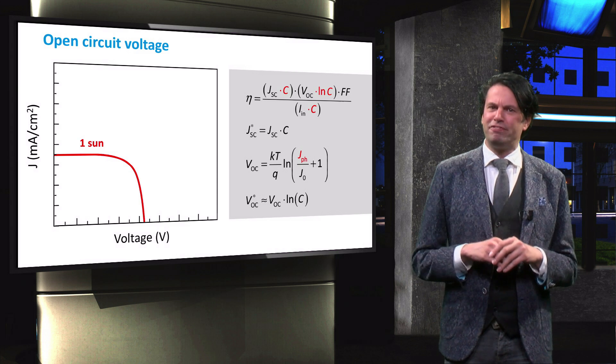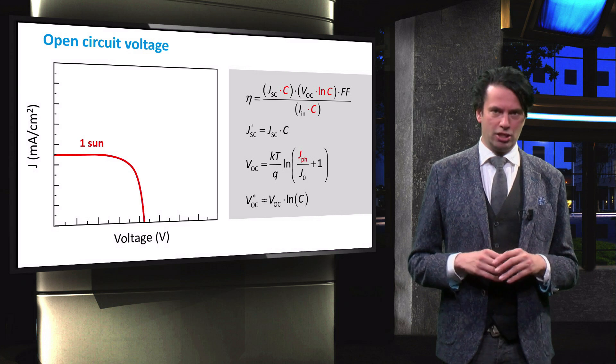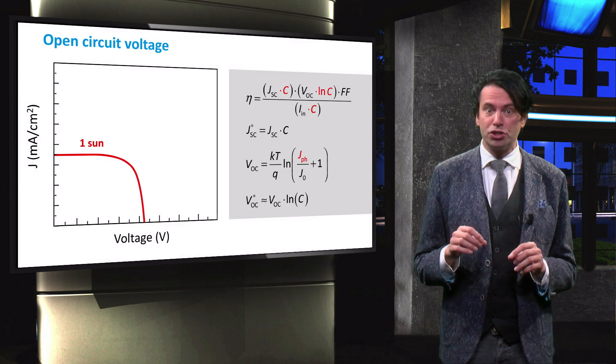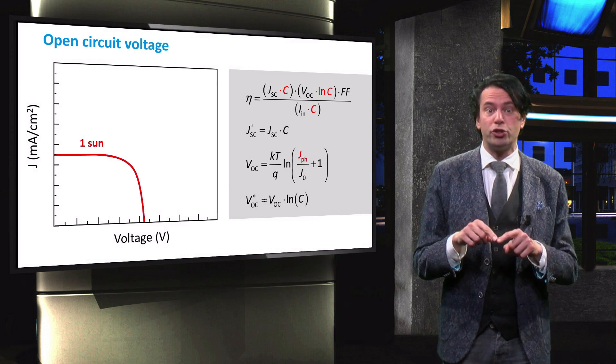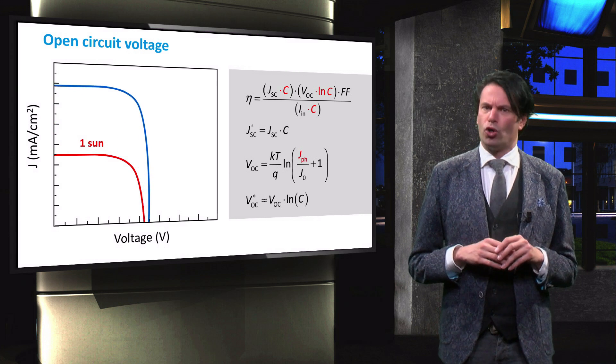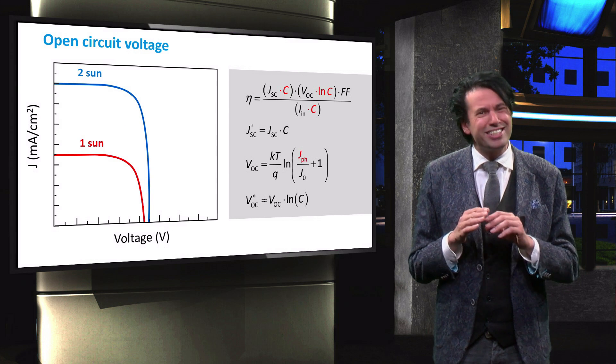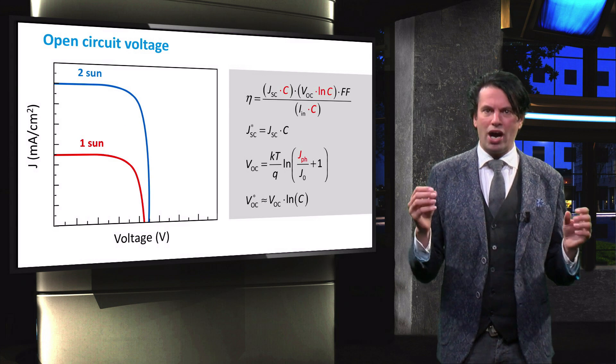Now in terms of the J-V curve. Here we see the curve of a random 3-5 solar cell under one sun illumination. We can now draw the J-V curve of this solar cell under two sun illumination. The blue curve shows that the JSC will approximately double and the VOC will slightly increase.